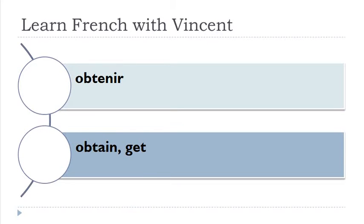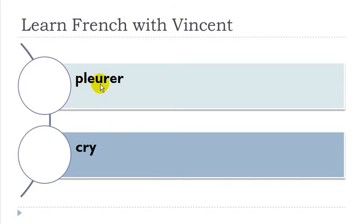Obtenir. Pleurer. Remember, here you've got 'e' and 'u' — it's 'eu'. Pleu, pleu, and then 're'. Pleurer.